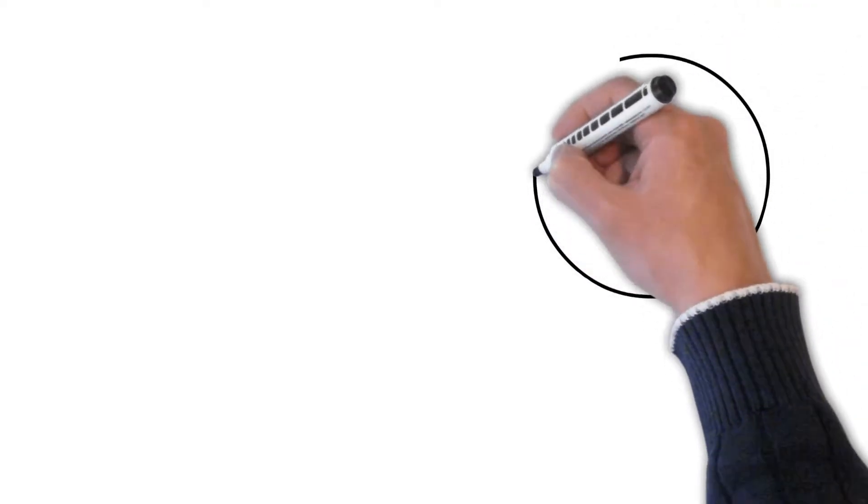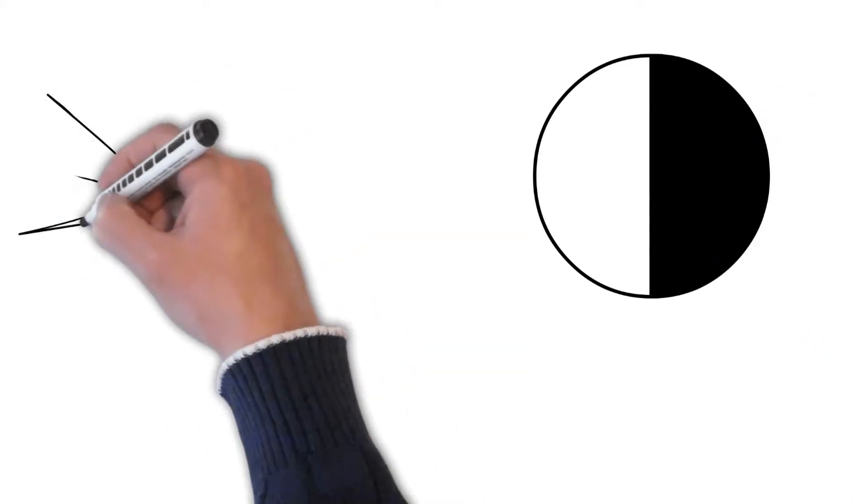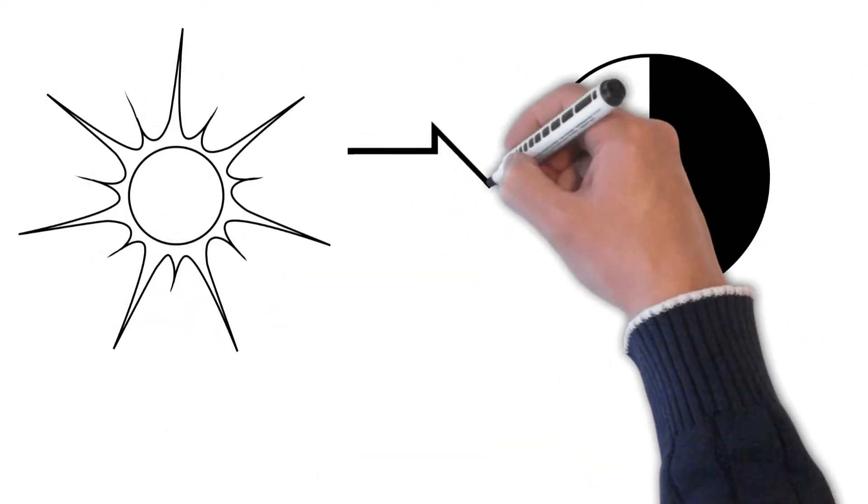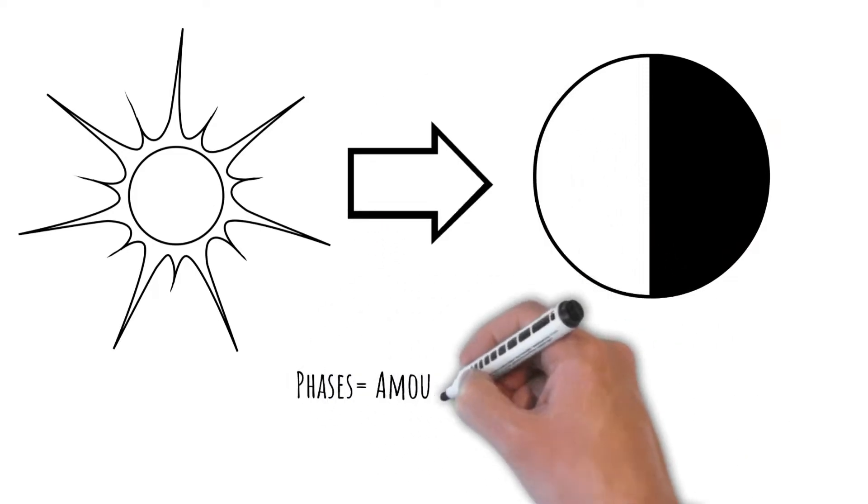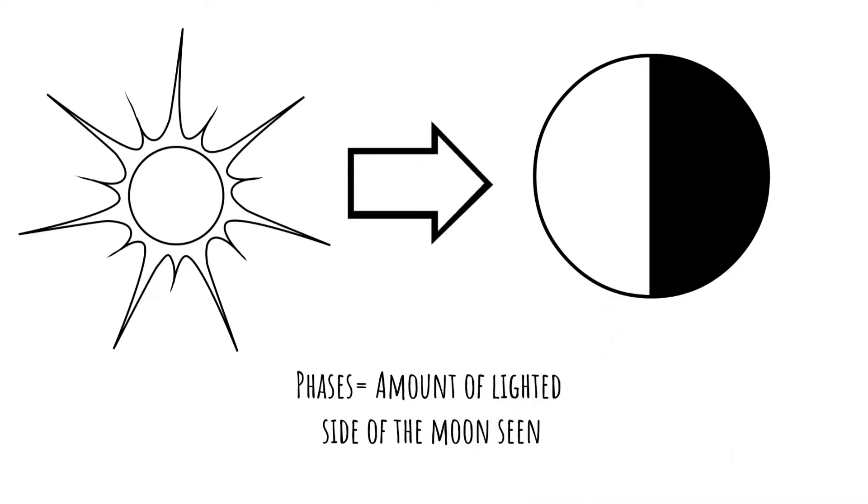The phases of the moon simply refer to the amount of the lighted side of the moon that we can see down here on Earth. So let's talk about these phases of the moon, what they mean and what we see for each one.